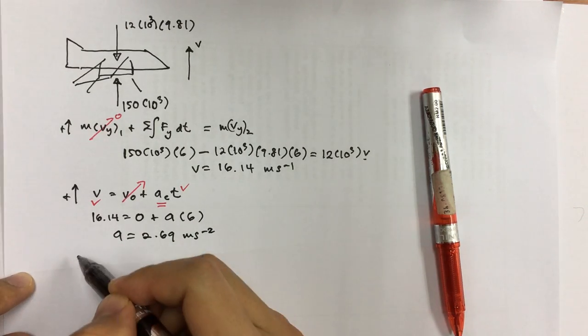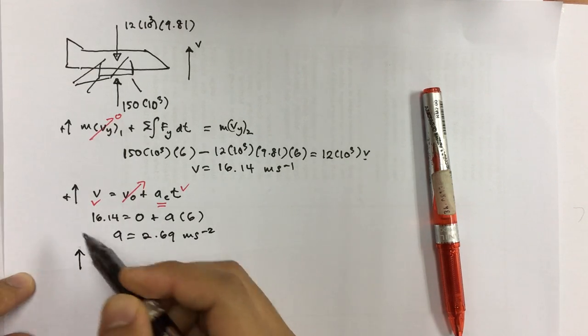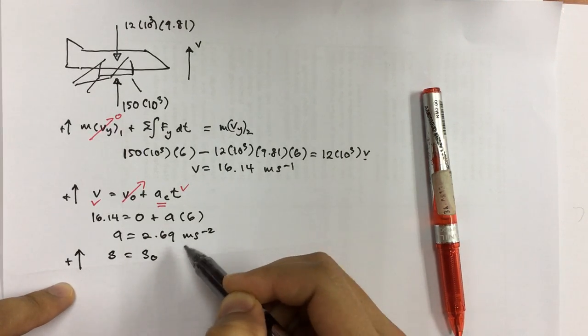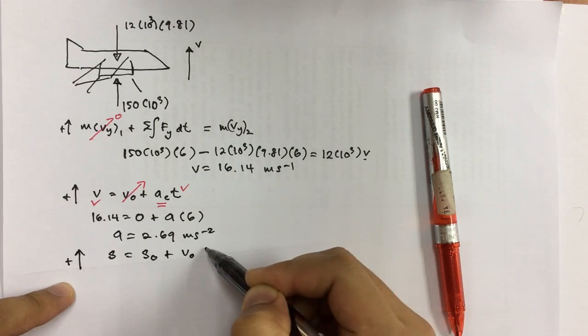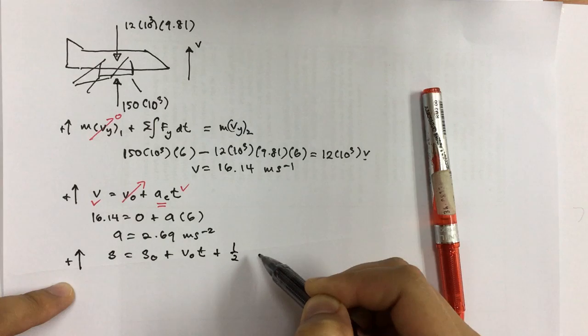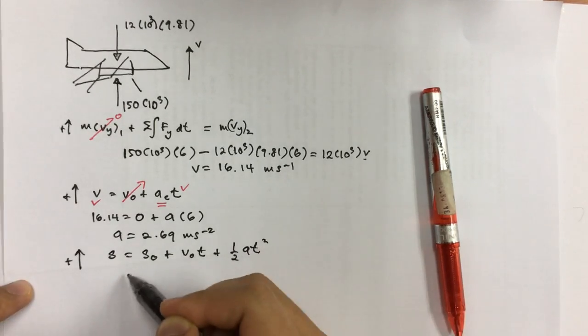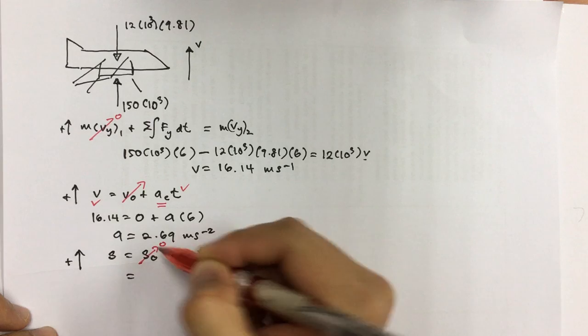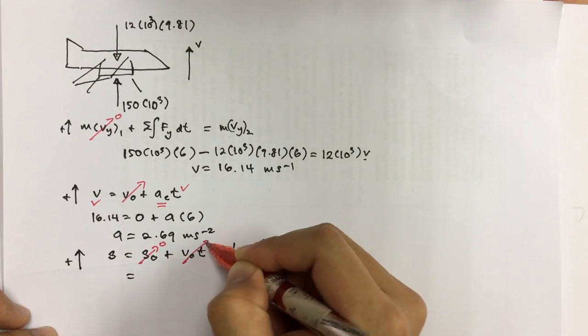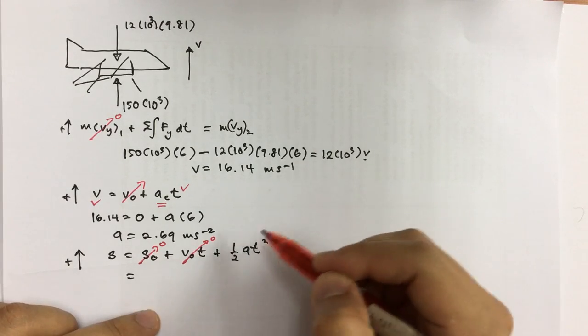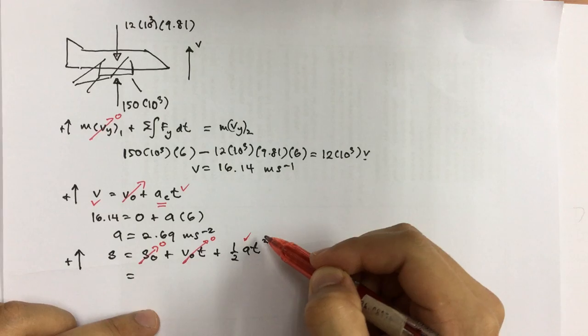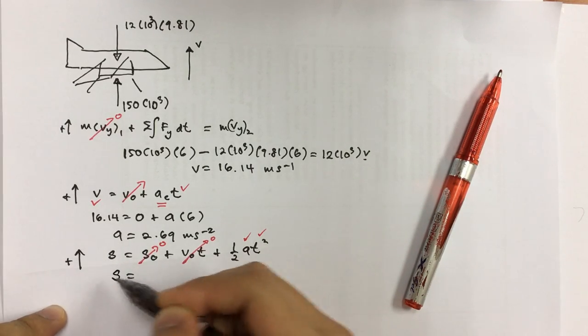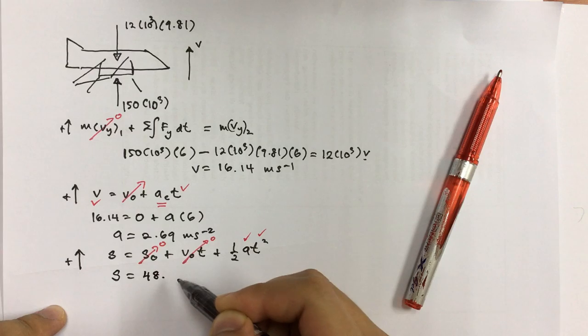Since we have the acceleration, we can now measure the distance. So going up is positive as usual. So S equals to the starting position, plus the starting velocity times t, plus half acceleration times t squared. So we know that the initial position is equal to zero. This is going to be zero. It starts from rest, so this is going to be equal to zero as well. So we know the acceleration value, and then the time taken, which is 6 seconds. So we solve all this, and we can get the distance. So S equals to 48.4 meters.